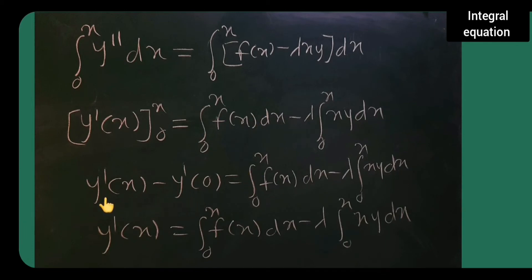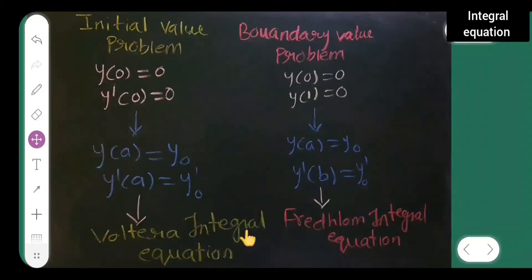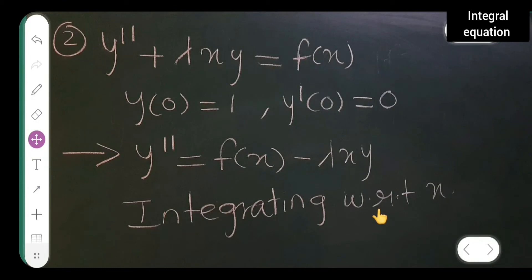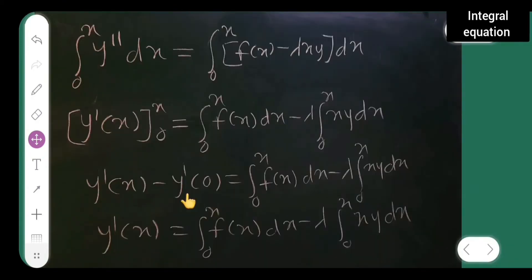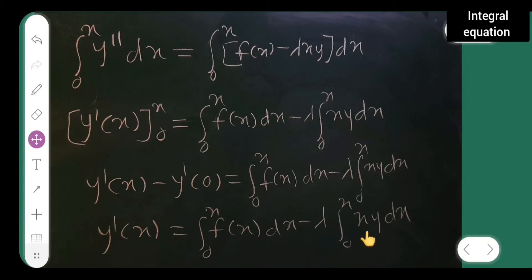Now applying the boundary condition: y dash of 0 is equal to 0, so plugging that in, y dash of x equals integral from 0 to x of f of x dx minus lambda times integral from 0 to x of x y dx.